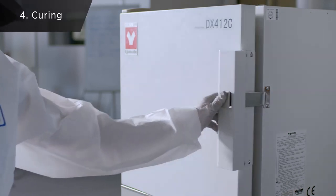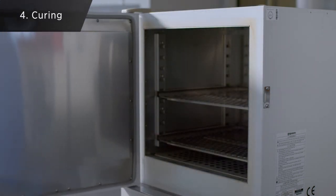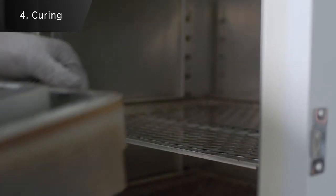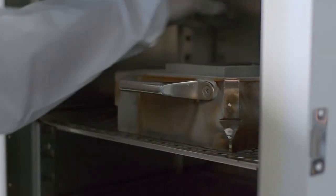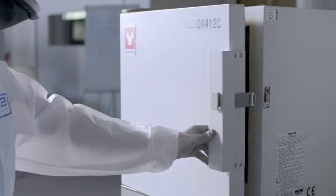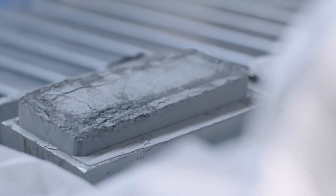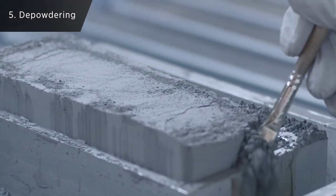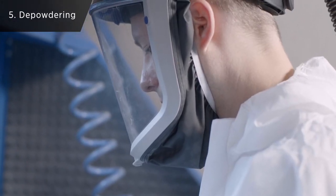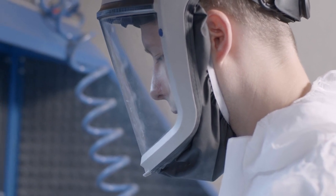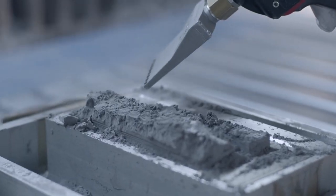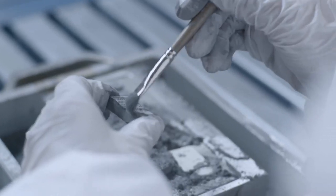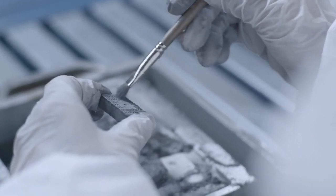Curing is the thermal process after printing, in which the printed components are dried for several hours to make them stronger. The green parts must be handled carefully, as the printed components have not yet reached their final strength. During the next step, depowdering, the metal powder that was not bound during printing is collected and conditioned to ensure efficient use of materials in our manufacturing processes. Up to 95% of this material can be reused for future print jobs.